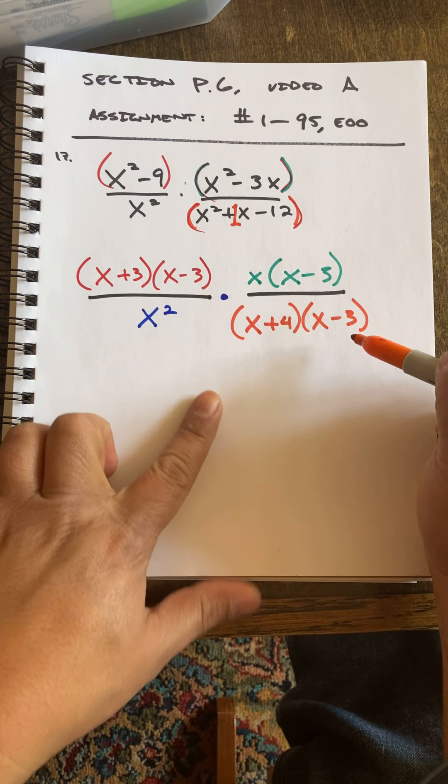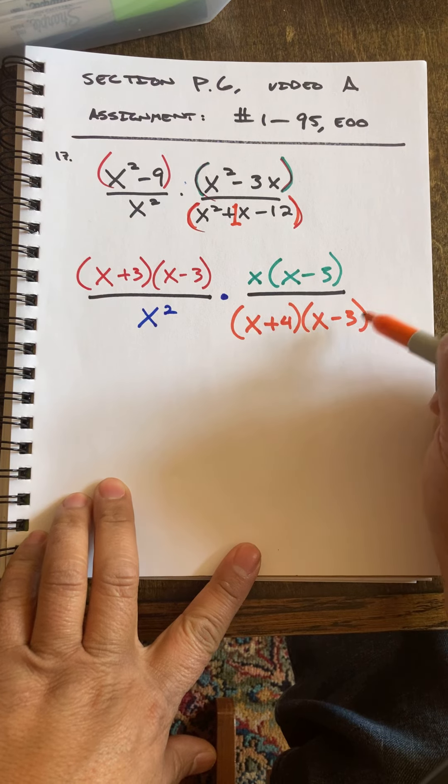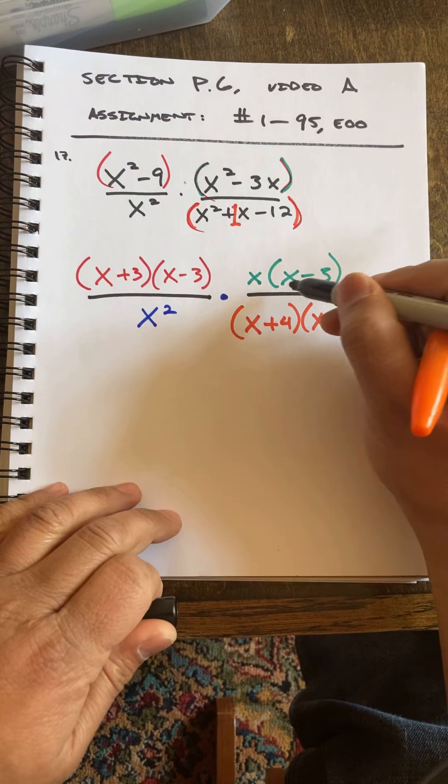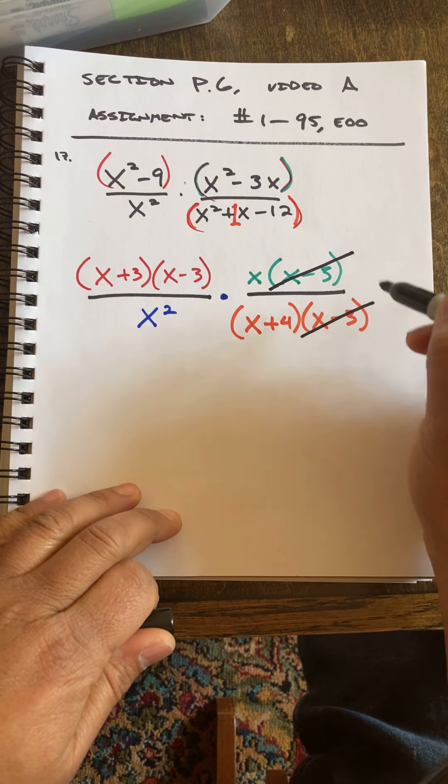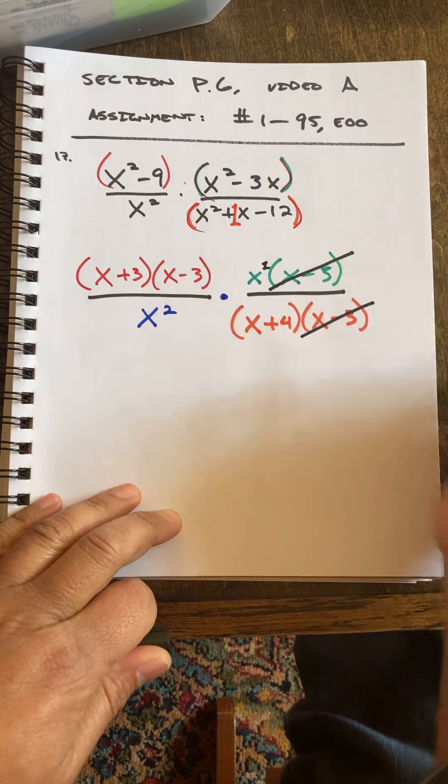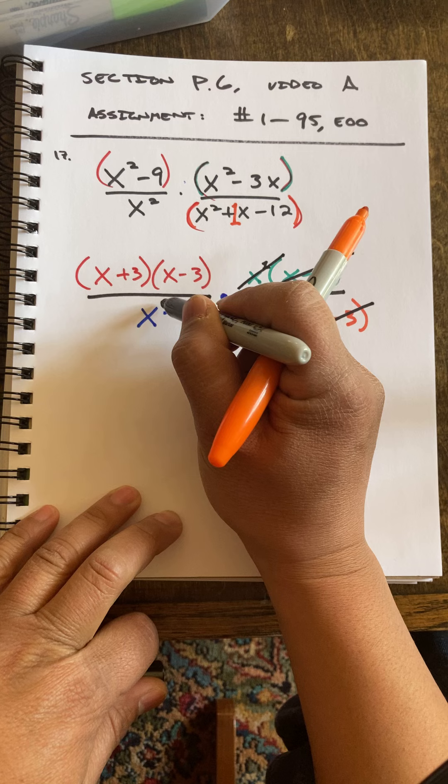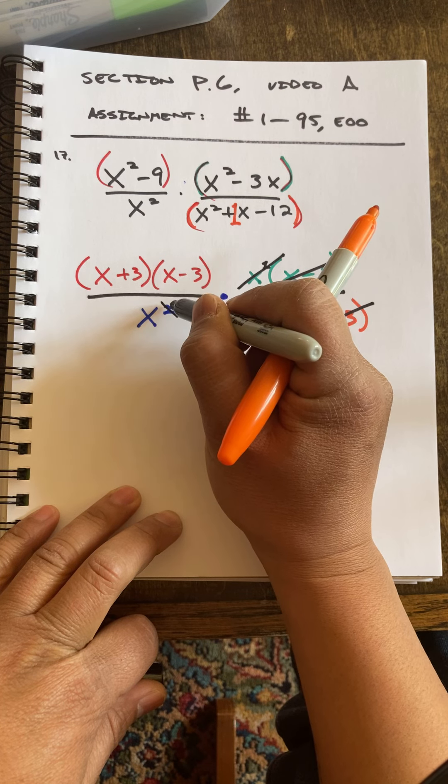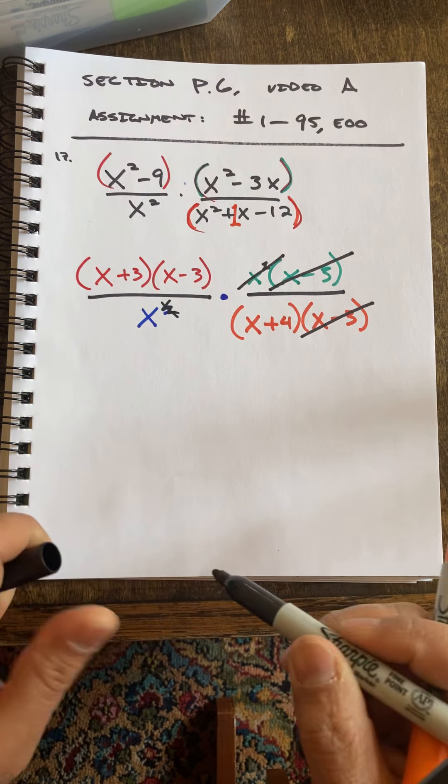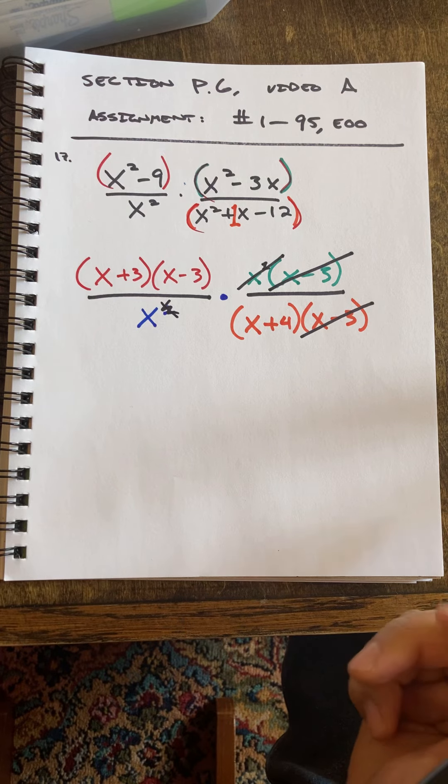Let's look at everything we can cancel out here. X minus three cancels with X minus three. That's nice. Here I have another invisible one. So I'll cancel that, and that will just be one. And that's all I'm left with.